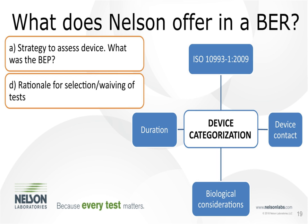The next section is Device Categorization, based purely on ISO 10993-1: device contact, duration, and typical biological considerations. We'll also include any parallel standards — for example, cardiovascular devices or gas pathway devices may have additional standards with further considerations. For the points covered in Clause 7, we're addressing the BEP, discussing which endpoints need to be addressed and why, and justifying which tests were or were not performed based on those parallel standards.